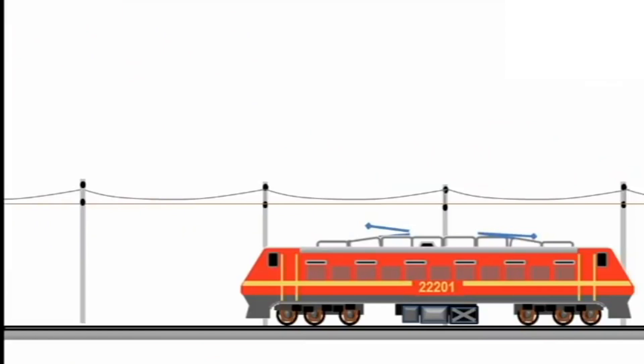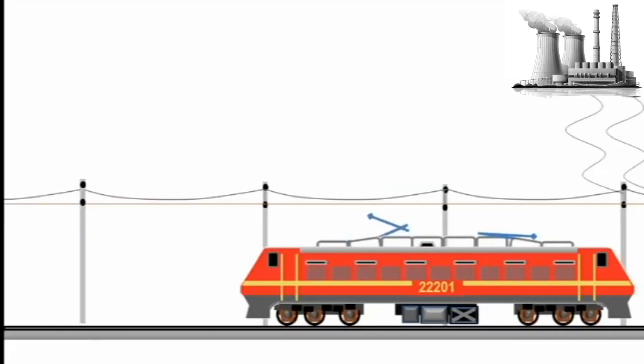Electric locomotives have been providing hauling power for trains since 1837. Unlike steam and diesel locomotives, electric locomotives do not carry any fuel or energy source. The energy that drives them may be located hundreds of kilometers away from the locomotive itself.